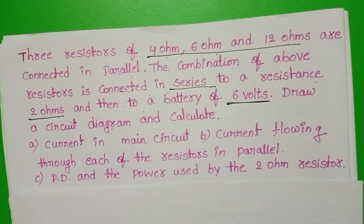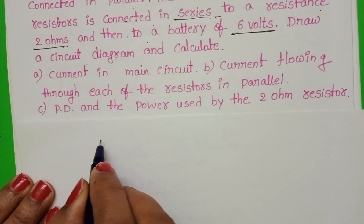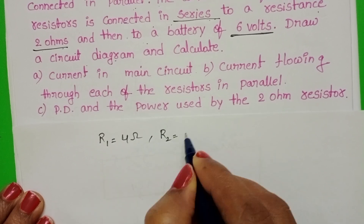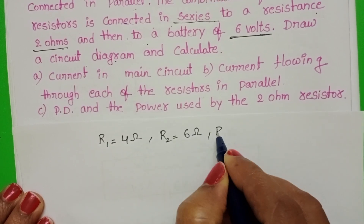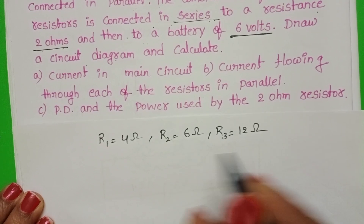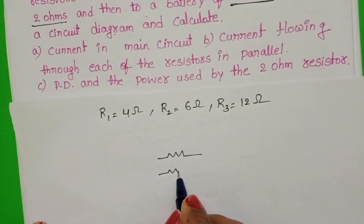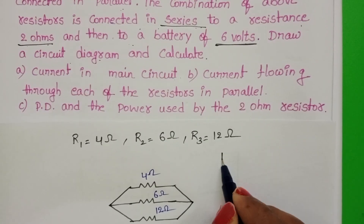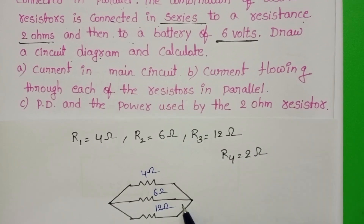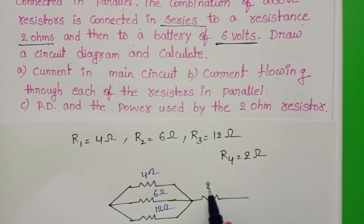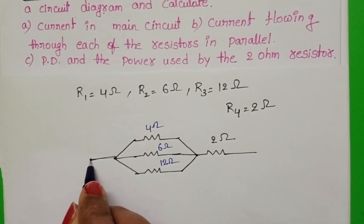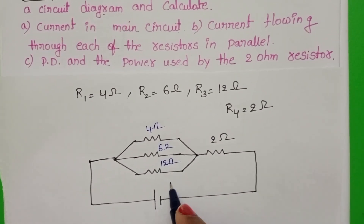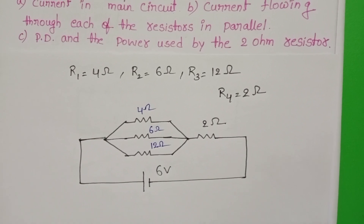First we will draw the circuit diagram. Given resistors of resistances 4 ohm, 6 ohm and 12 ohm — these 3 resistors are in parallel. Another resistor of 2 ohm is connected in series with this parallel combination, and a battery of potential difference 6 volt. This is the required circuit diagram.